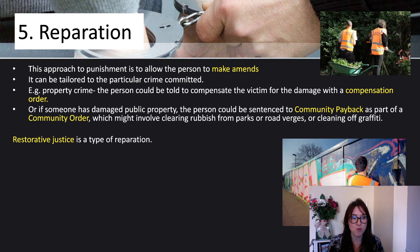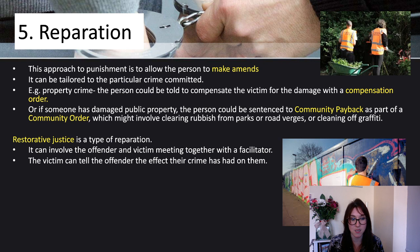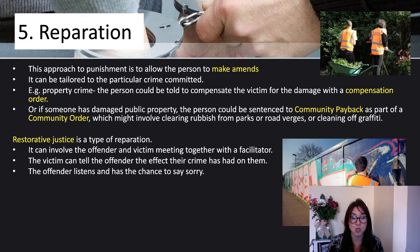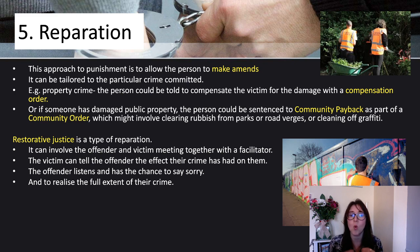Restorative justice is a type of reparation. It can involve the offender and victim meeting together with a facilitator. The victim can tell the offender the effect their crime has had on them, and the offender listens and has the chance to say sorry and to realise the full extent of their crime. This can be very powerful — for example, if you commit a burglary against an elderly person, meeting that person and hearing how it has affected their life, or meeting their family, can be very effective. But it all depends on whether the person who committed the crime is willing to see the effects and want to listen; otherwise it can be extremely traumatic for the victim or the victim's family.